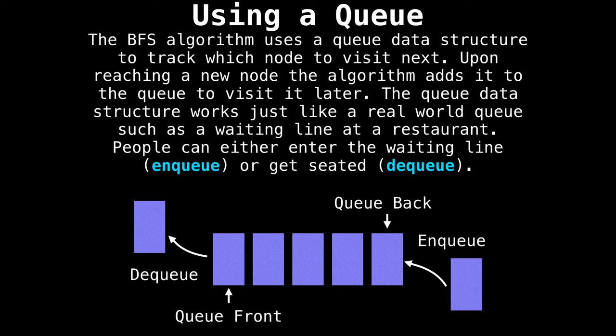In the previous animation, we relied on a queue to help us track which node we should visit next. Upon reaching a new node, the algorithm adds it to the queue to visit it later. The queue data structure works like a real world queue, such as a waiting line in a restaurant. People can either enter the waiting line, that is get enqueued, or get seated, dequeued.